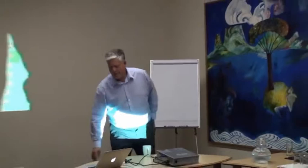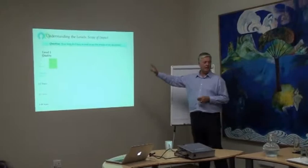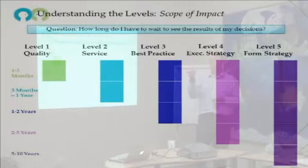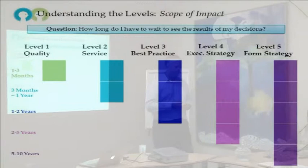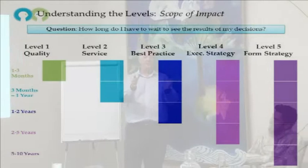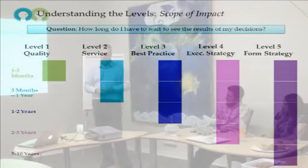How long do I have to wait until I can see the results of my decisions? This is a key feature. Level 1 — you're going to wait three hours to see what you've done come to fruition, at the very most three months. I'm coaching a group of leaders in a gaming company at the moment, and I saw some lights go on. I believe we're offering a gambling counseling service.